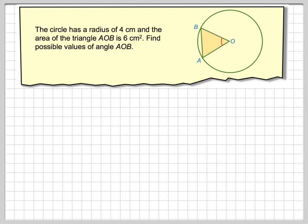Hello again, another video. This time we've got a triangle in a circle which has a radius of 4cm and the area of the triangle we're told is 6cm squared. Find the angle, or possible values, for angle AOB.